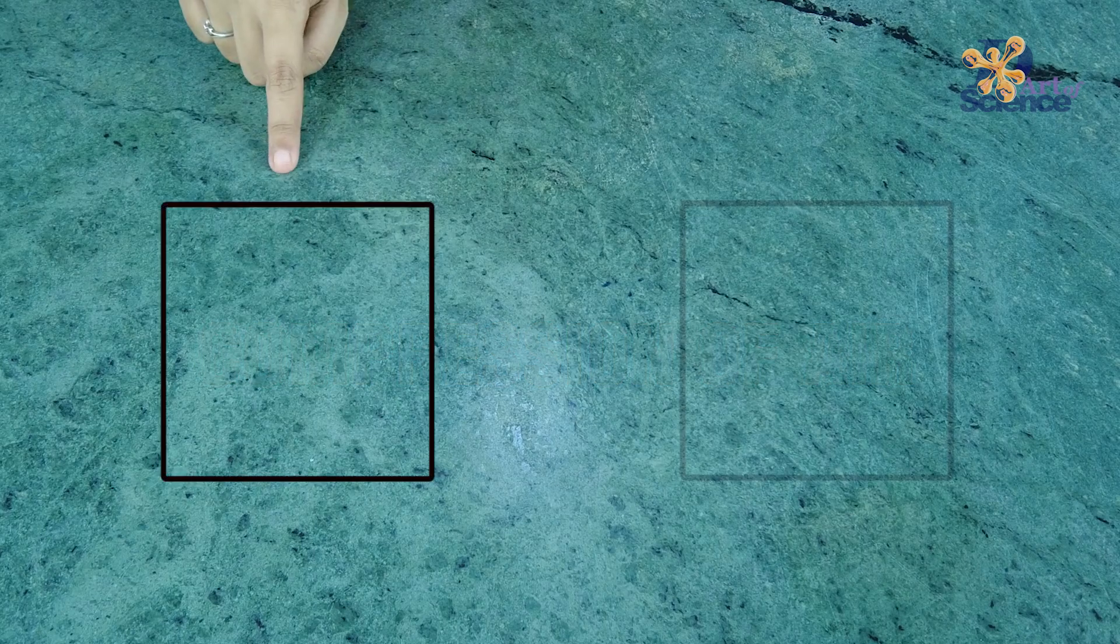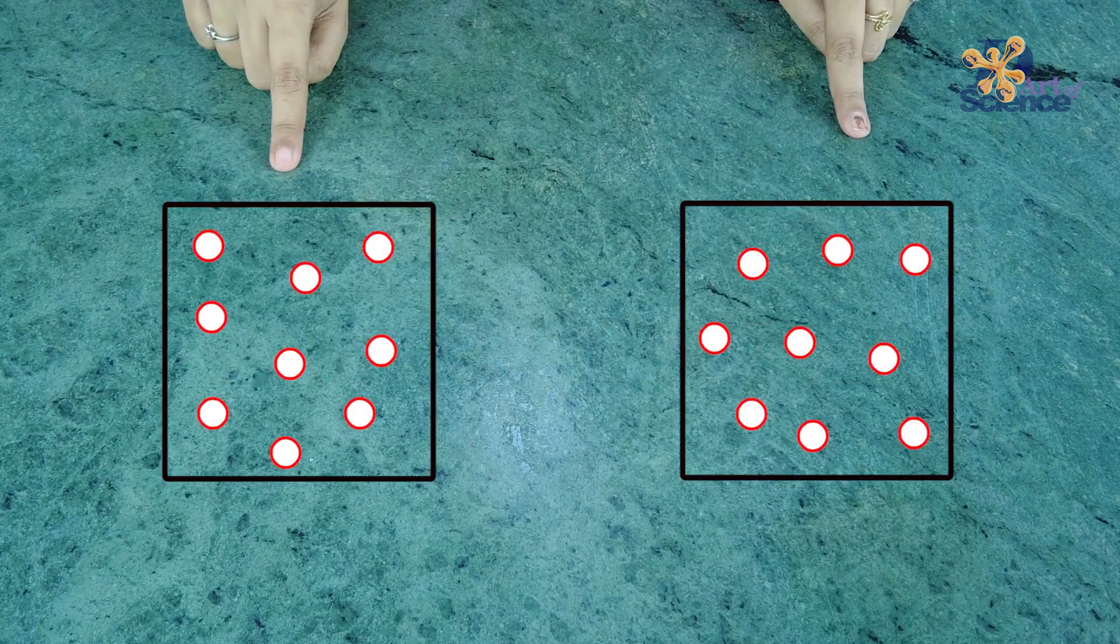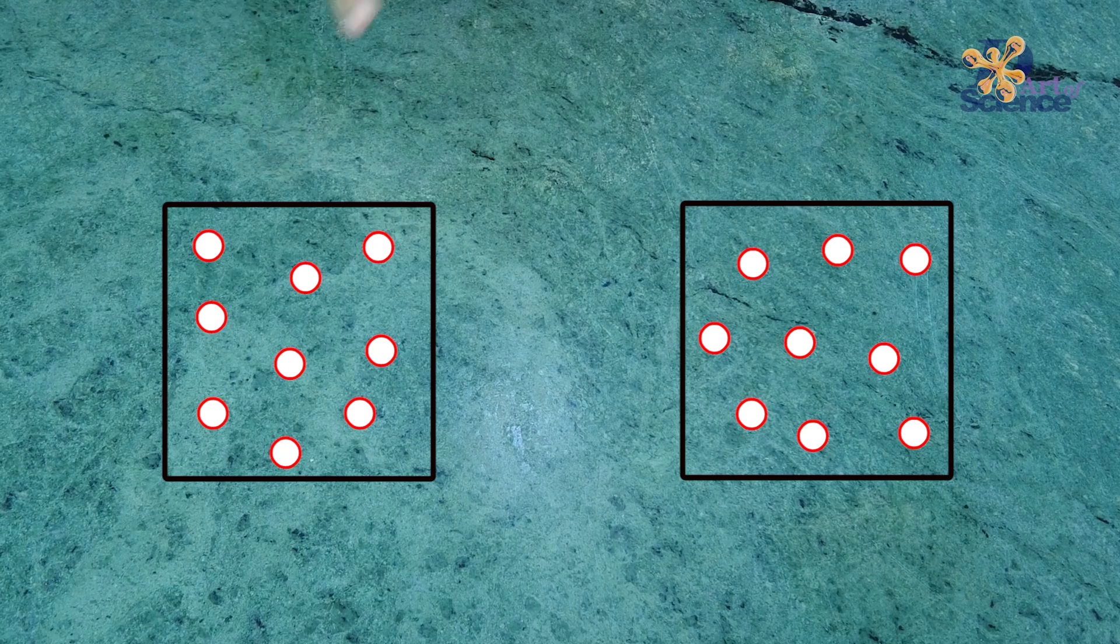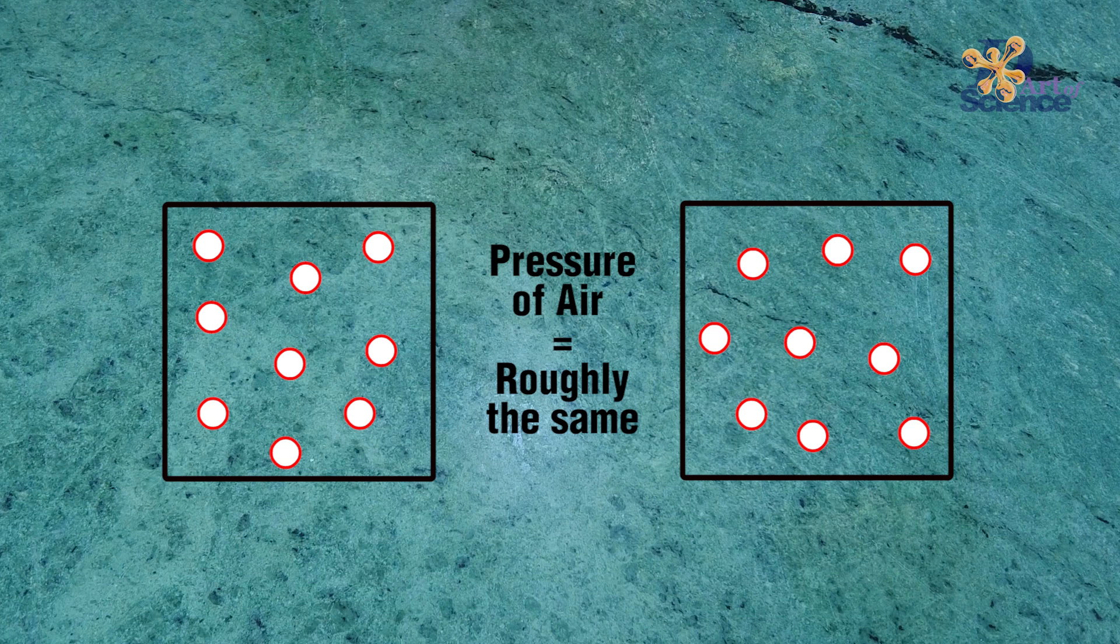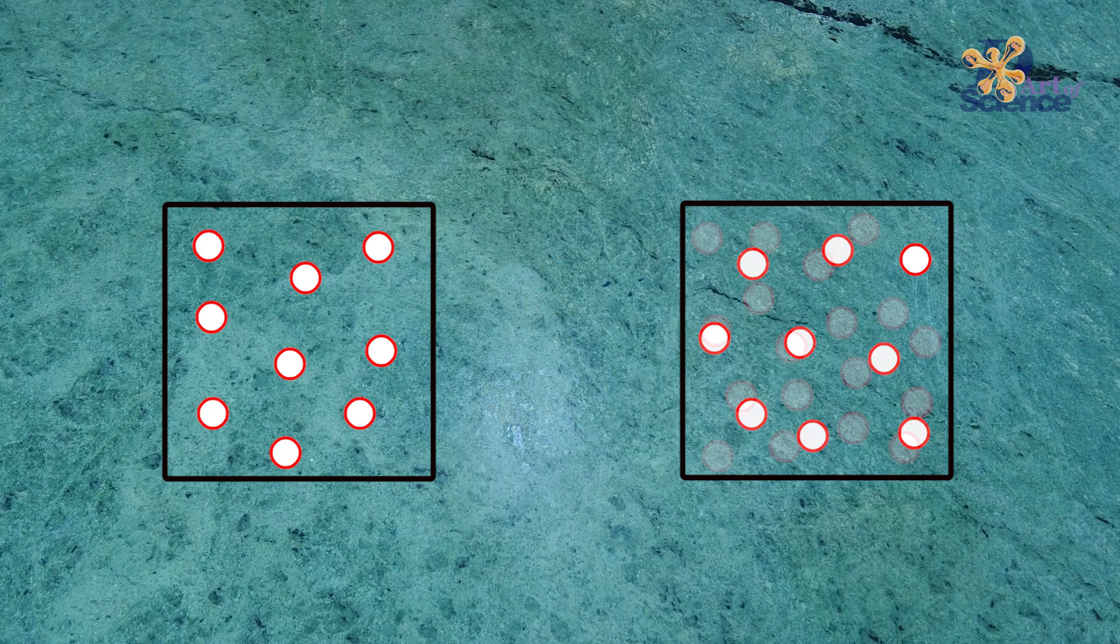Right now they have roughly the same amount of air particles. But what would happen if I just push some more air molecules in this space? Now the same amount of space has more air molecules, so the pressure of air in this system increases.